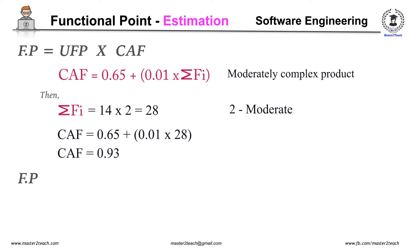As we know, Functional Point equals UFP times CAF. Unadjusted Functional Point is equal to 50 and CAF is equal to 0.93. Therefore, Functional Point is equal to 46.5.